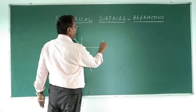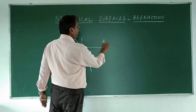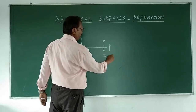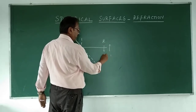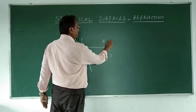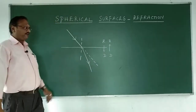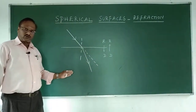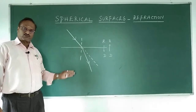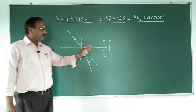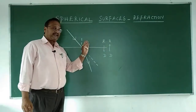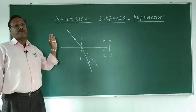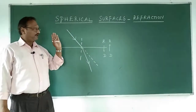This bending of light when it crosses from one medium to another is called refraction. Whether it will bend towards the normal or away from the normal depends on whether it is moving from a rarer to a denser medium or denser to rarer medium. If it is rarer to denser, it bends towards the normal because it slows down. When it is denser to rarer, it bends away from the normal because it speeds up.